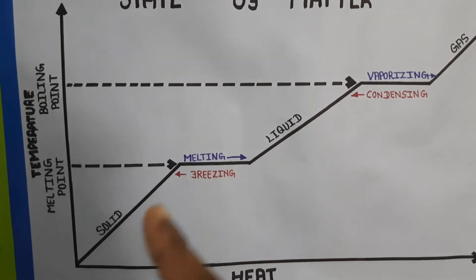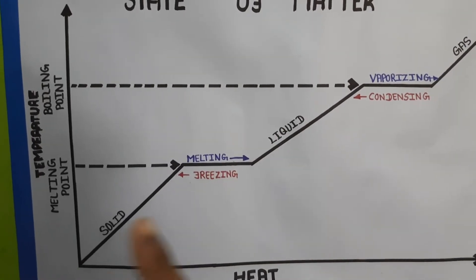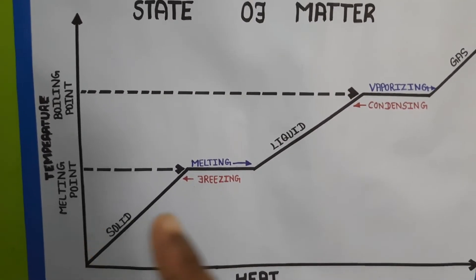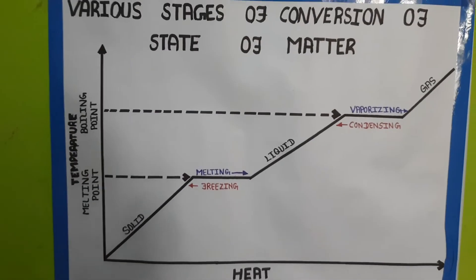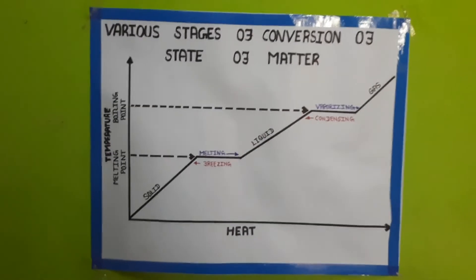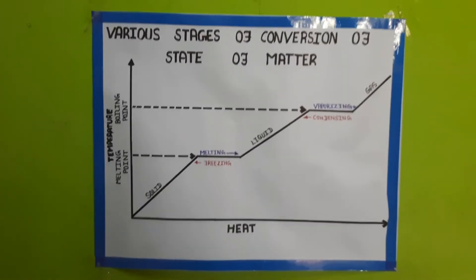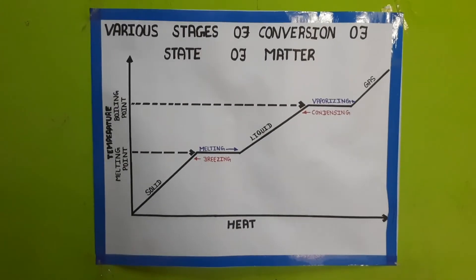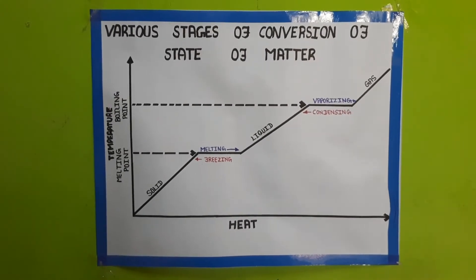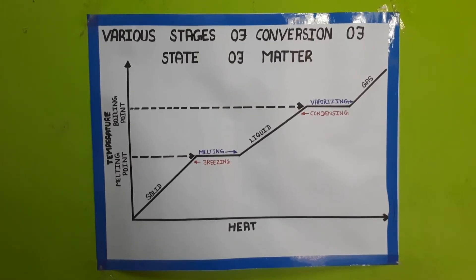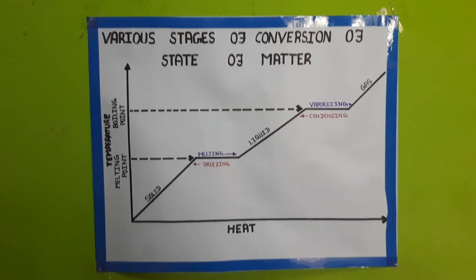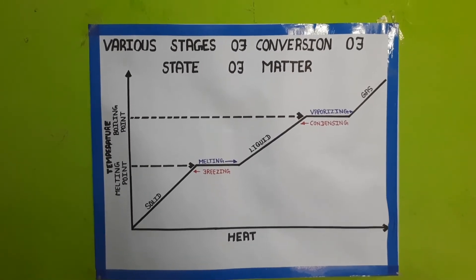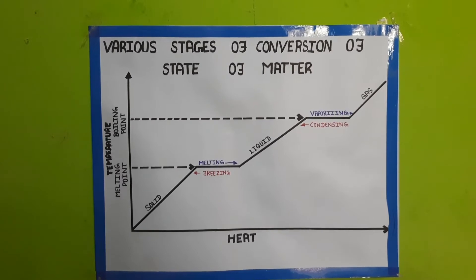Liquid on freezing changes into solid. This is the change of state — how you change solid to liquid, liquid to gas. This chart is very useful for students. If you see a small graph in the book, you can explain the details to the students.